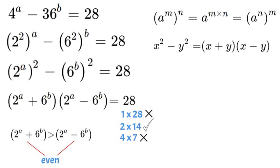Now since we previously agreed that 2 to the power of A plus 6 to the power of B will be greater than the other side, we will set the plus side equal to 14 and the negative side equal to 2.